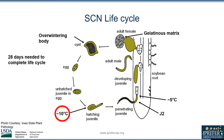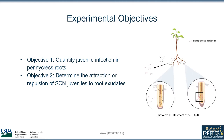There exist two key developmental temperature constraints that are important for an overwintering crop like pennycress. Egg hatch and juvenile development does not occur until 10 degrees Celsius in the spring, and development in the root stops at 5 degrees Celsius going into the winter. My project had two experimental objectives: the first was to quantify juvenile infection in pennycress roots, and the second was to determine the attraction or repulsion of soybean cyst nematode juveniles to root exudates.